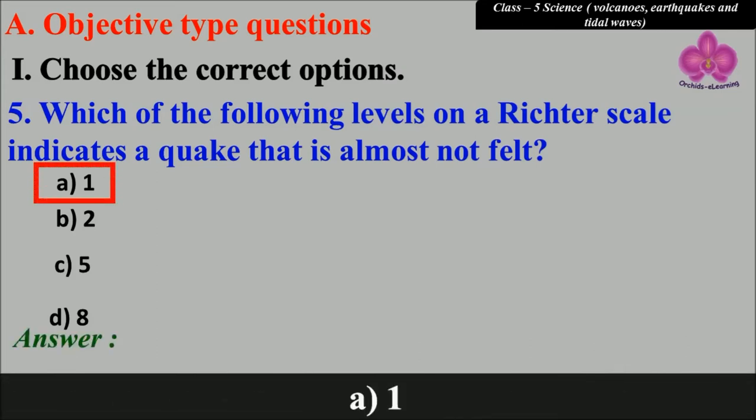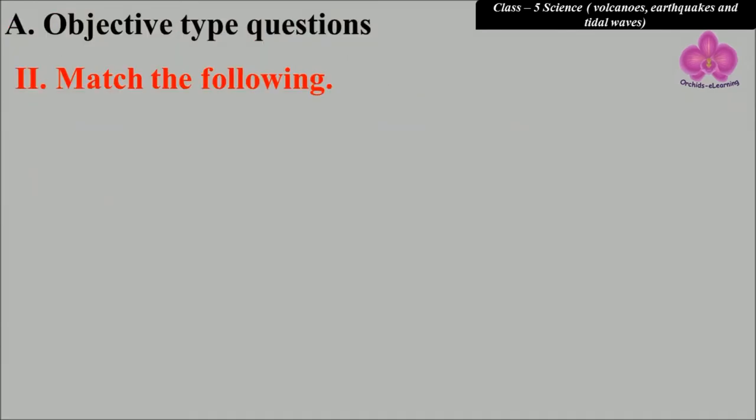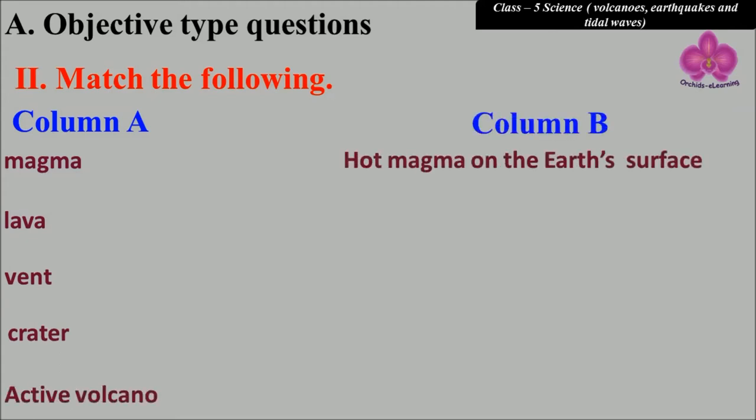Next question: Match the following. Look at the options in column A: magma, lava, vent, crater, active volcano. Column B: hot magma on the earth's surface